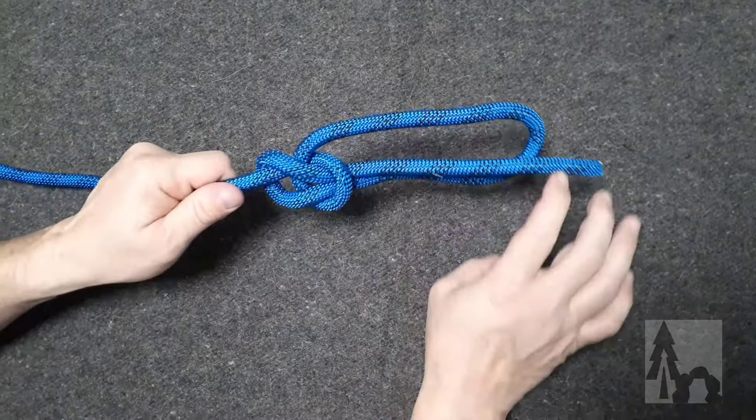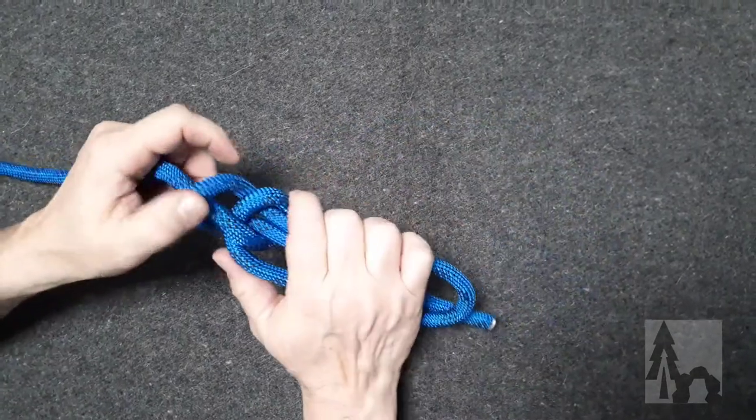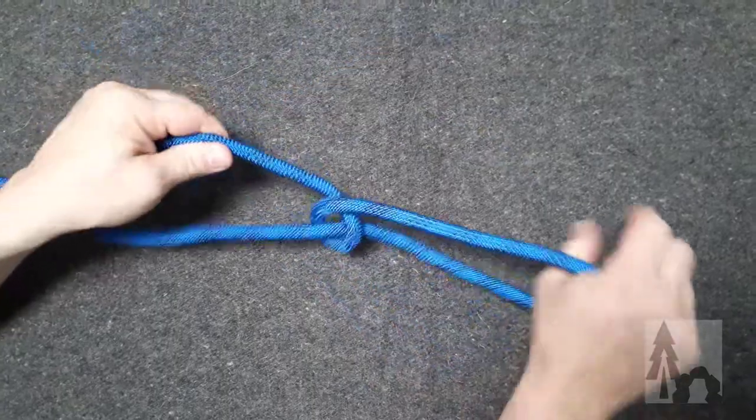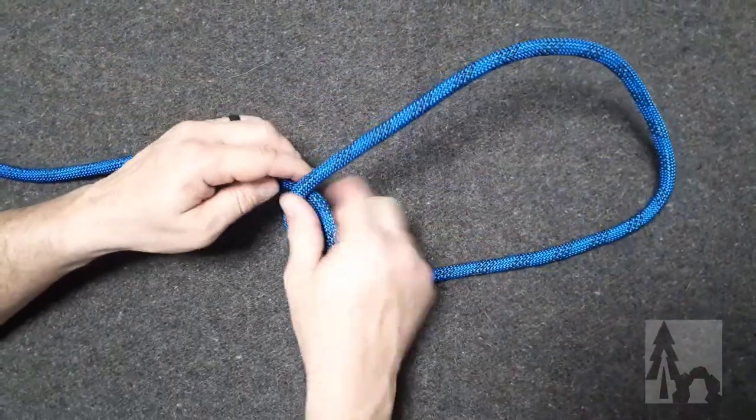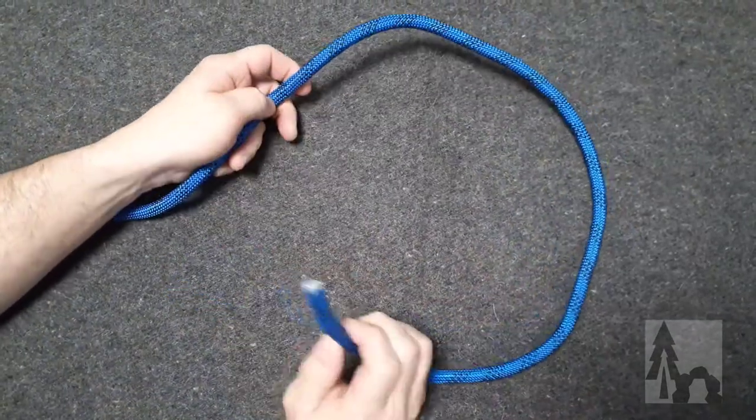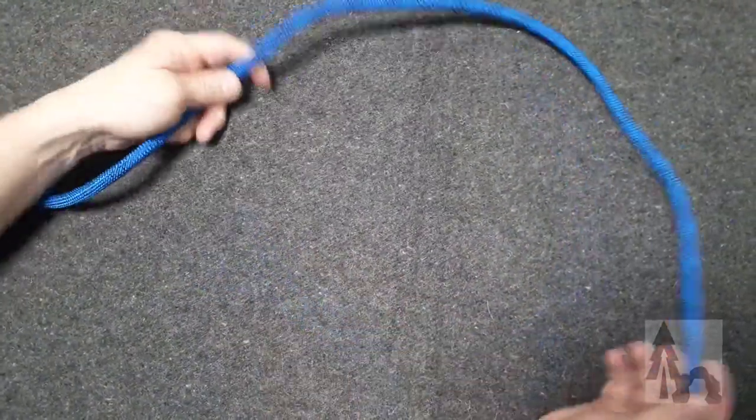And no matter how much weight or tension it's under afterwards, the bowline is great because it's super easy to untie. A lot of knots will collapse or bind down so tight they're almost impossible to get loose. So here's how you're going to do this.